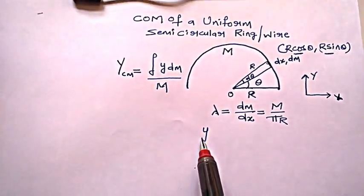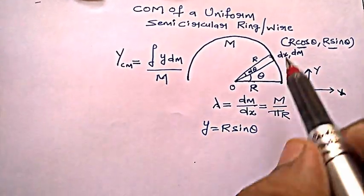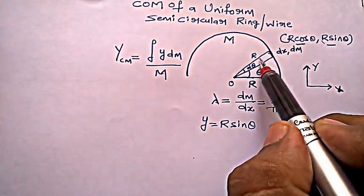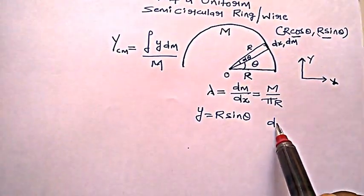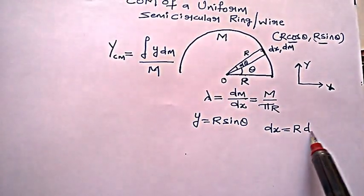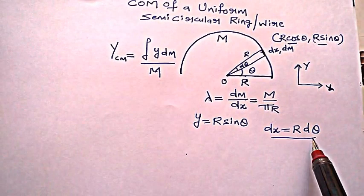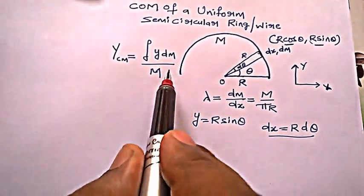Which means simply y is r sin θ. I also have dθ and r, so this elemental length dx can be written as dx equals r into included angle dθ. So I have dx equals r dθ and y is r sin θ, so let's substitute all these things here.